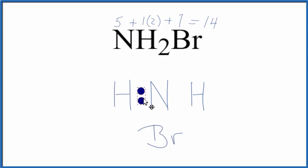Now we'll put electrons between atoms to form chemical bonds. At this point we've used six electrons. We have a total of 14.